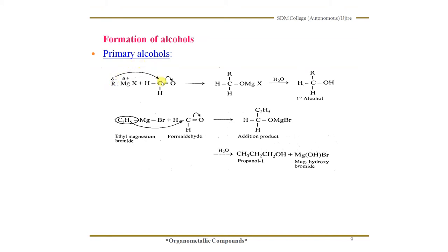As a result, there is attraction between this carbon and the organic group R. So R forms a bond with carbon, and MgX goes to the oxygen. This forms an addition product called an adduct. Then in the second step, it undergoes hydrolysis — addition of water takes place. H goes to oxygen, converting it into OH, and the remaining MgX and OH give a byproduct. This gives the general formula of a primary alcohol, R-CH2OH.